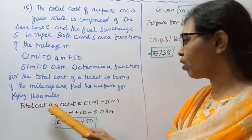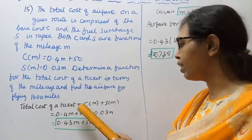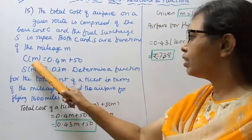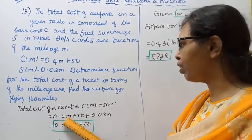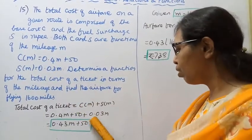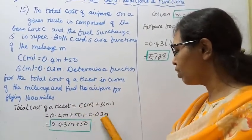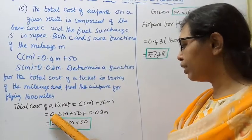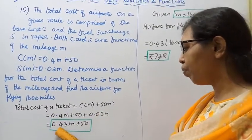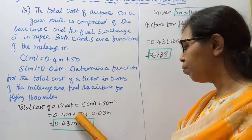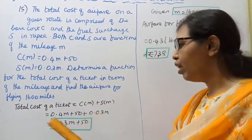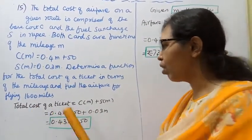Total cost of a ticket = C(M) + S(M). C(M) = 0.4M + 50, S(M) = 0.03M. And the total cost of a ticket, find the airfare.